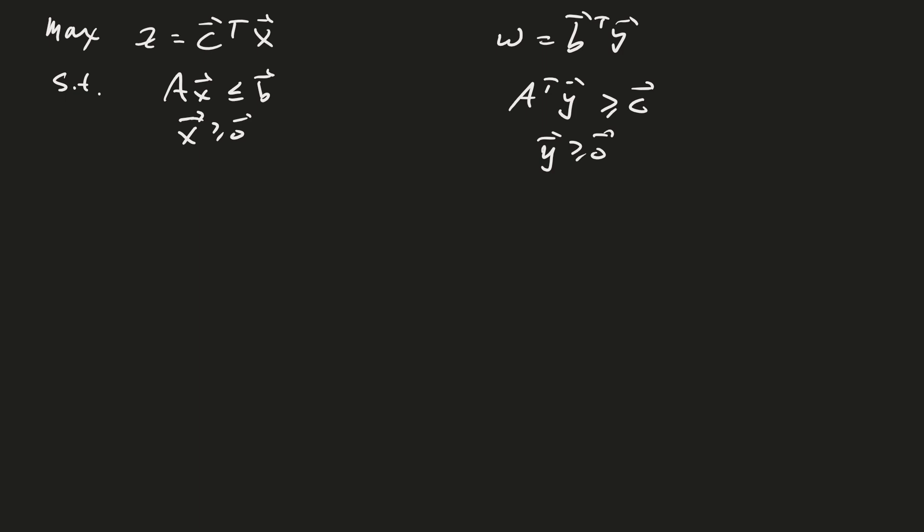One way you can define the slack variable or the slack vector s is that it's the difference between Ax and b. So that is, I want to say b minus Ax just to make sure that my s is going to be positive. So s is greater than or equal to 0 if x is feasible.